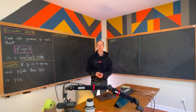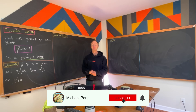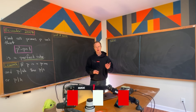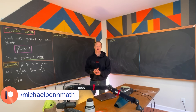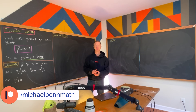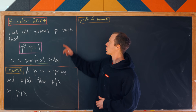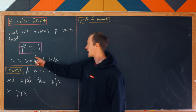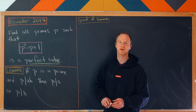Today we're going to look at a nice number theory problem which comes from the 2017 Ecuadorian Math Olympiad. What I like about this problem is that it involves lots of really interesting tricks along the way towards a solution. Our goal is to find all primes p such that p squared minus p plus one is a perfect cube.